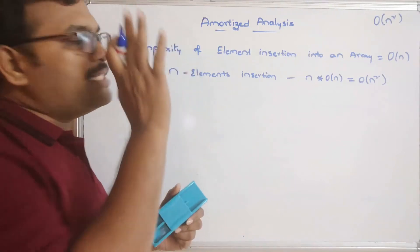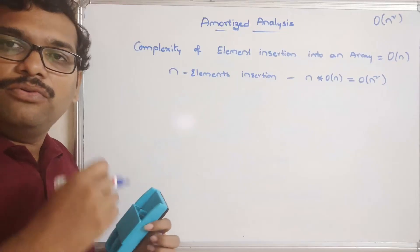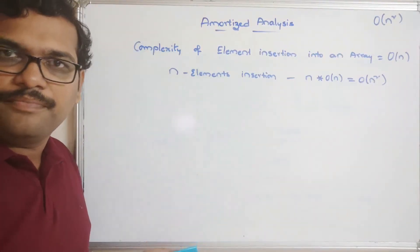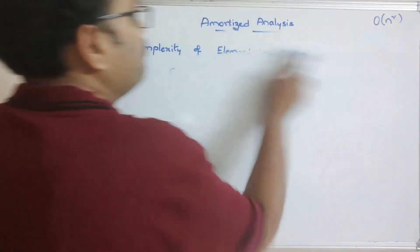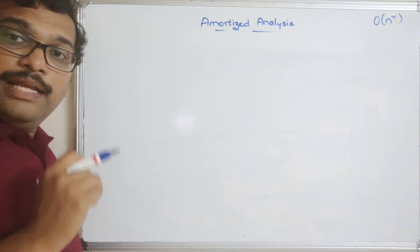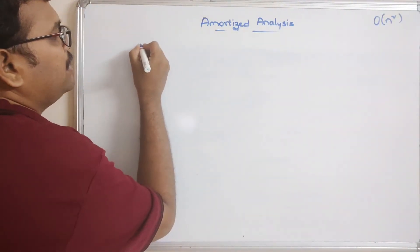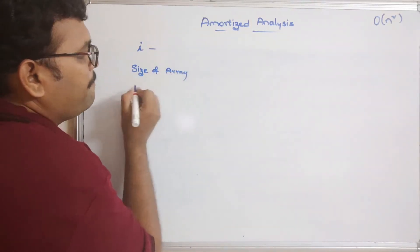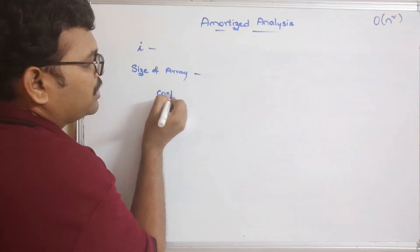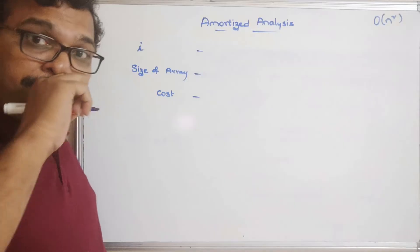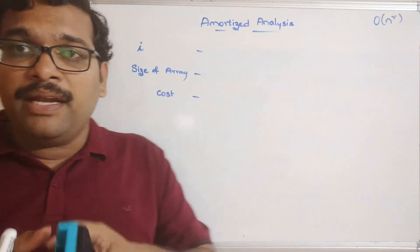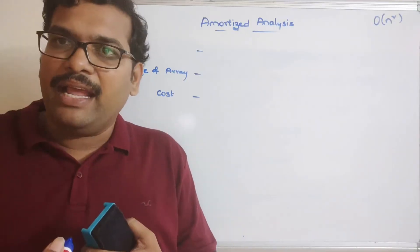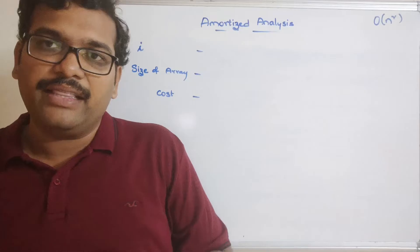Now calculating the amortized analysis: we have to trace each and every operation and find the cost, then average all the different costs. One important thing to remember — an element can be easily inserted into an array. But if the array is full, we have to double the array and copy all the elements, then insert the new element. So if the array is full: double the size, copy all elements to continuous memory locations, then perform the insertion.